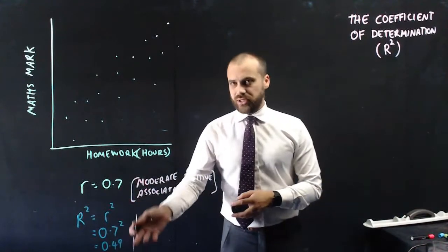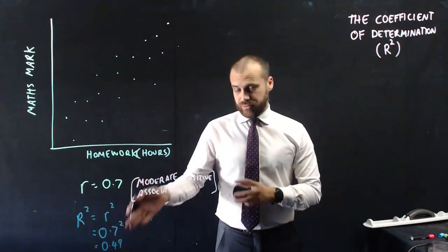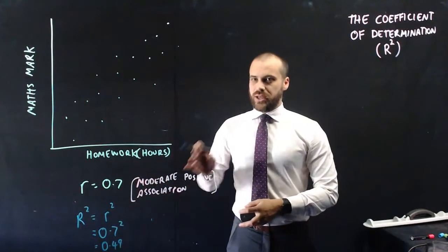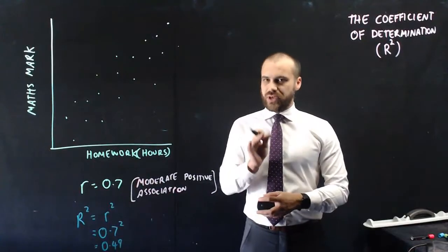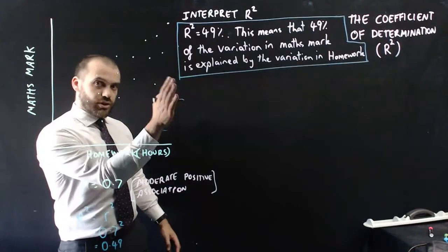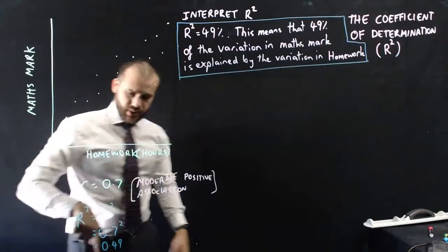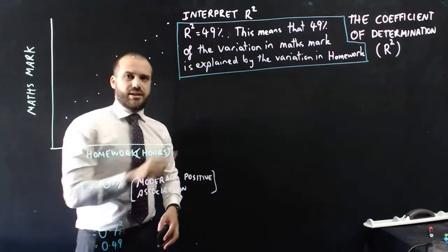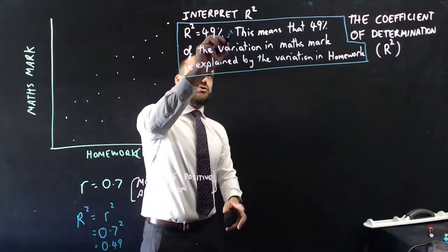But the important part is not being able to calculate r-squared, although you have to be able to do that. The important part is interpreting r-squared. I'm going to write up the words here because they're very, very important to get correct. So this is it. r-squared equals 0.49, but we write it as a percentage, 49%. And this is where we start talking.